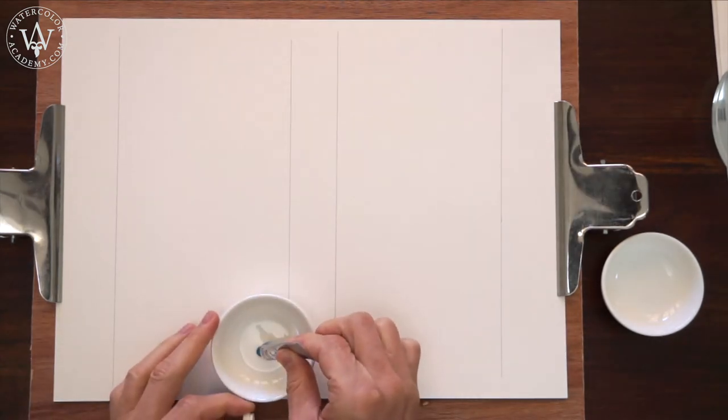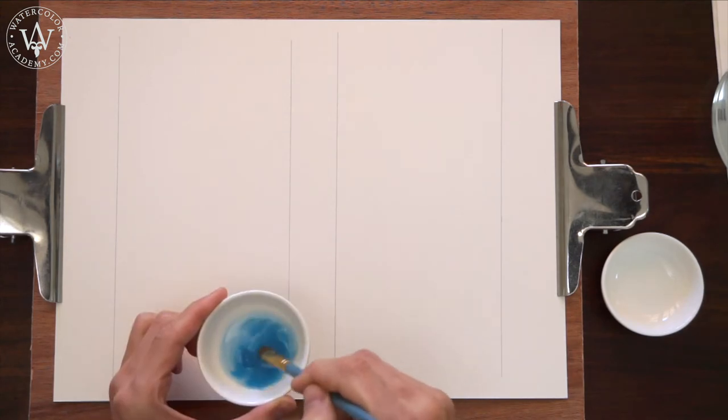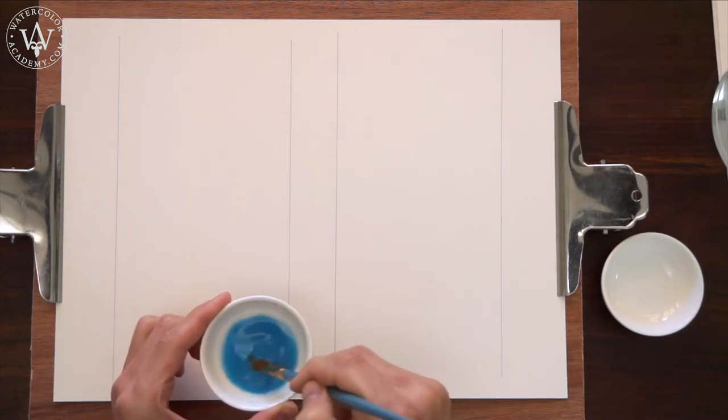First, I will make a plain wash with the Cerulean Blue pigment. I am pre-mixing this paint in the saucer.